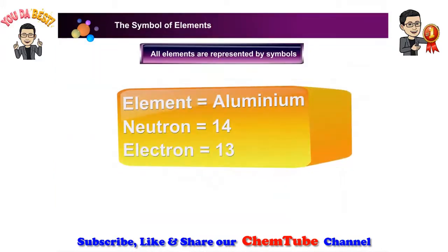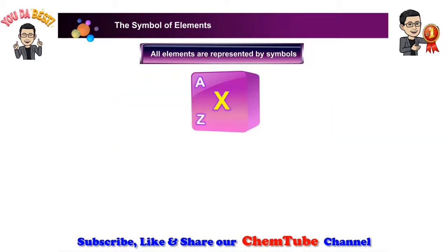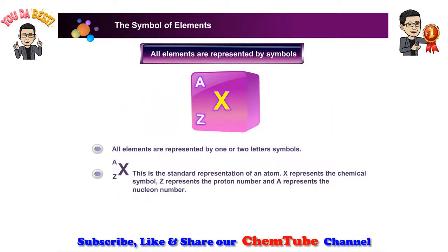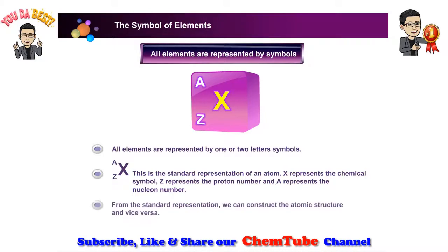All elements are represented by symbols — either one or two letters. In the standard representation of an atom, X represents the chemical symbol, Z represents the proton number, and A represents the nucleon number. From the standard representation, we can construct the atomic structure and vice versa.